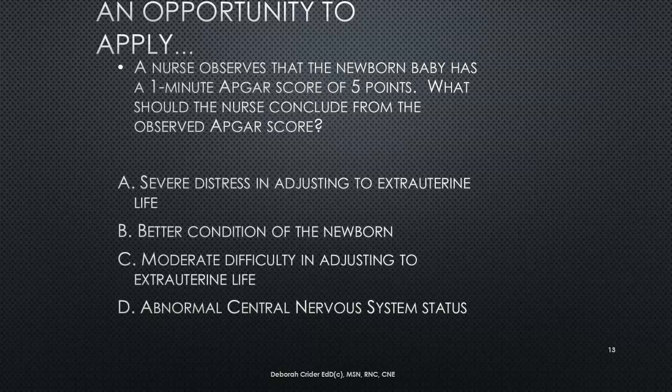Here's a chance to apply: a nurse observes that a newborn baby has a one-minute APGAR score of five points. What should the nurse conclude? If you chose C, you are correct — the baby has a moderate difficulty in adjusting to extra uterine life.